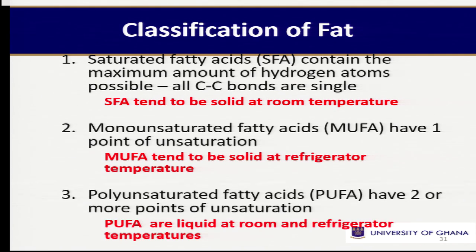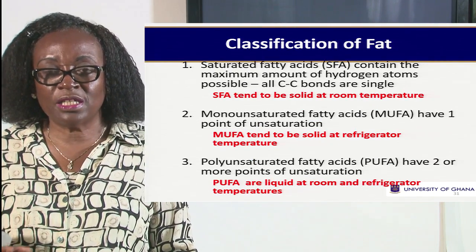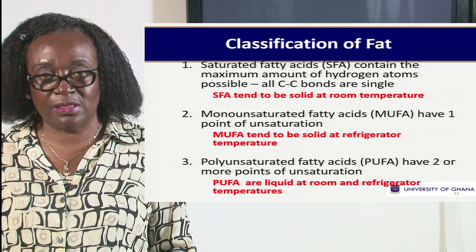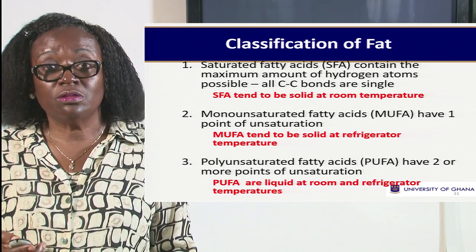We also classify fats into three main groups: we have the saturated fatty acids, we have the monounsaturated fatty acids — mono meaning one, so it means we have one double bond — and then the polyunsaturated fatty acids, which means it has more than two degrees of unsaturation. So the more unsaturated a fat is, the better; and the more unsaturated it is, the more liquid it is.